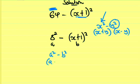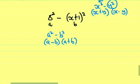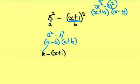Now, a² minus b² can be written as (a-b)(a+b). The values are a equals 8 and b equals (x+1). So in the first bracket, 8 minus (x+1).